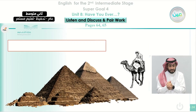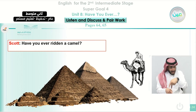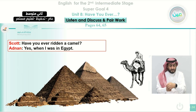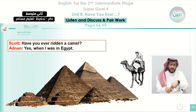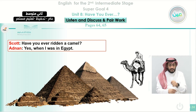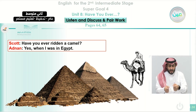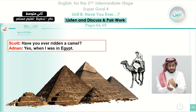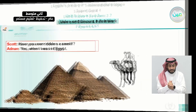Another question is about riding a camel. Scott asks, 'Have you ever ridden a camel?' The boy in the picture is riding a camel. Adnan says, 'Yes, when I was in Egypt.' He specifies the time: 'I rode it last year.' When you specify the time, you use past simple. We listened again to the conversation: 'Have you ever ridden a camel?' 'Yes, when I was in Egypt.'